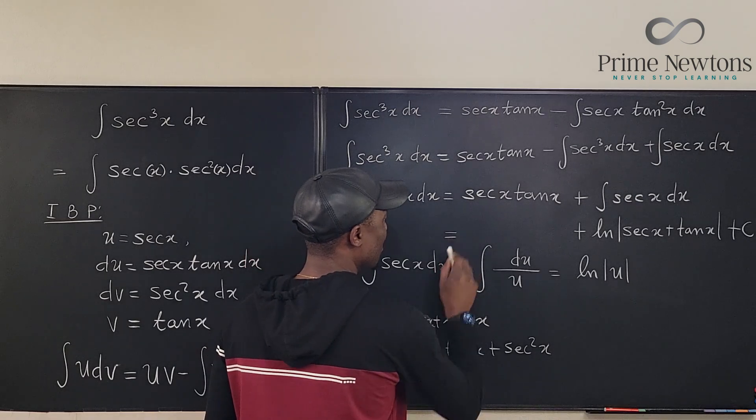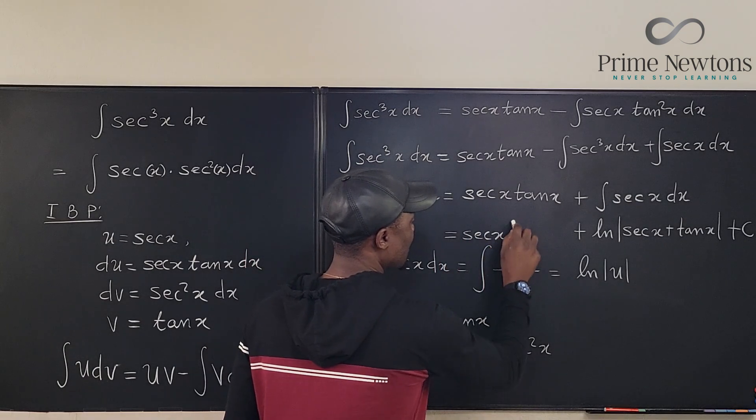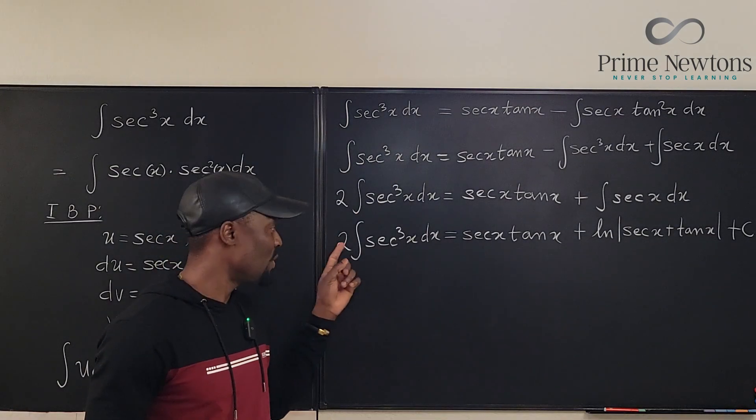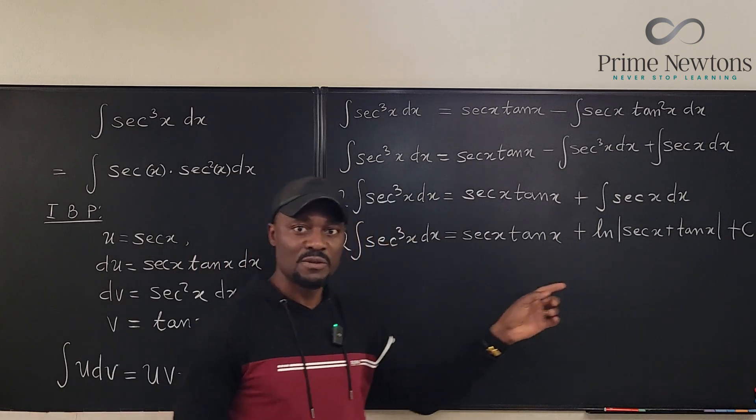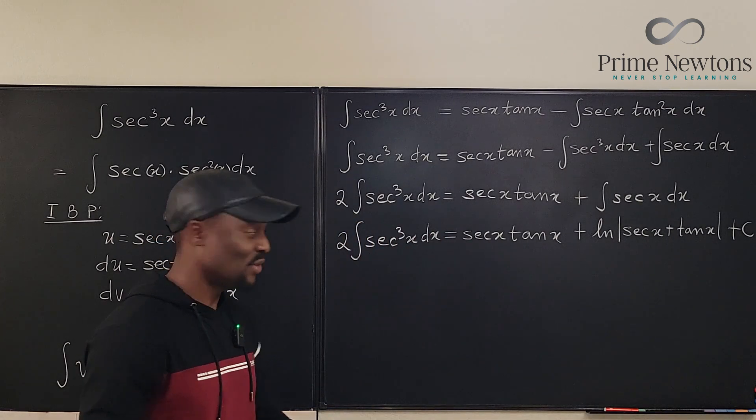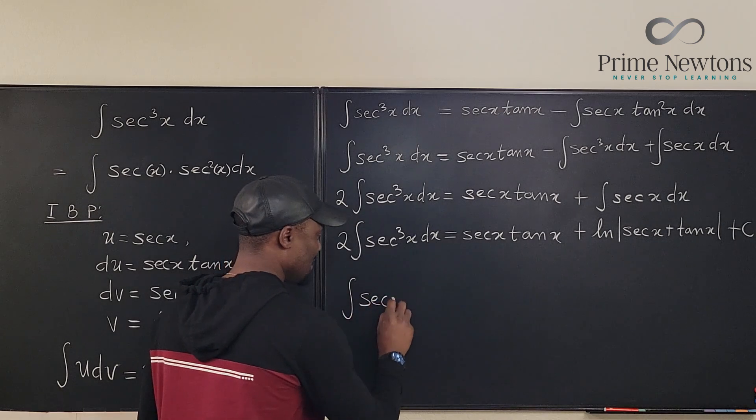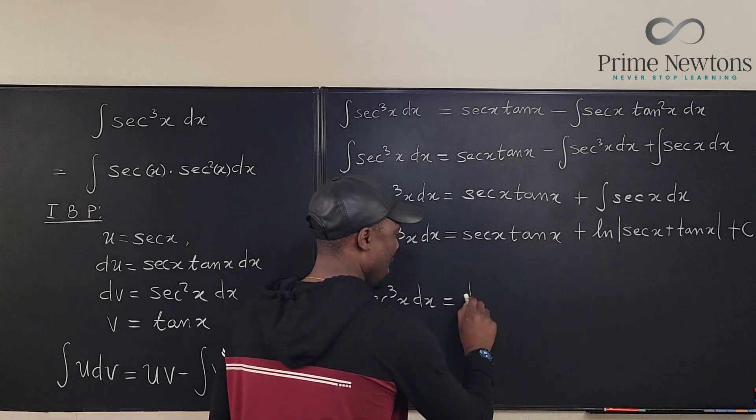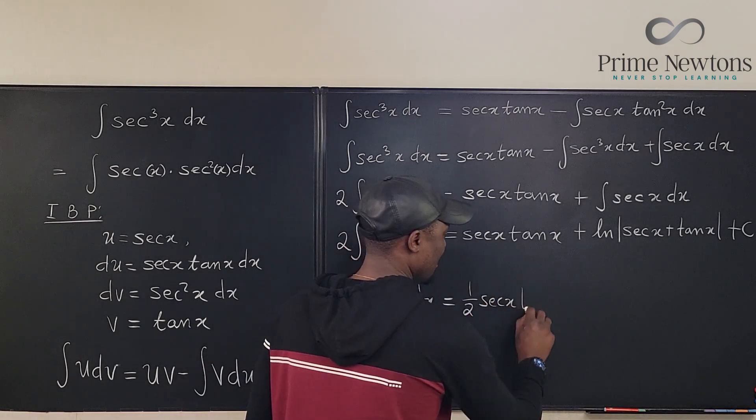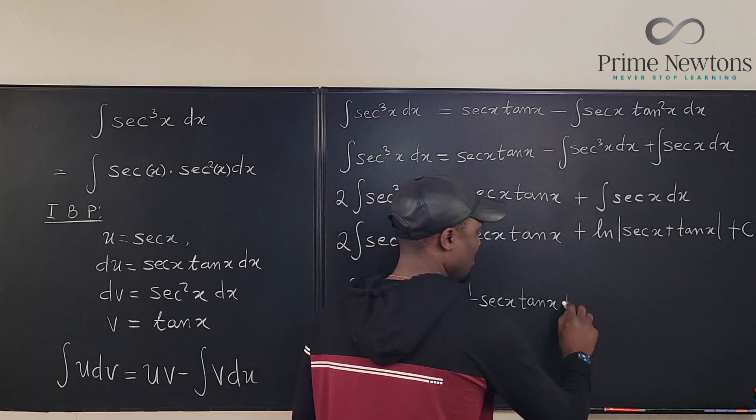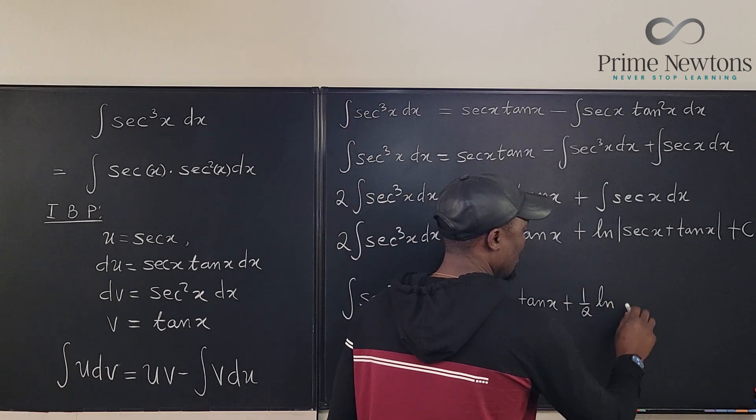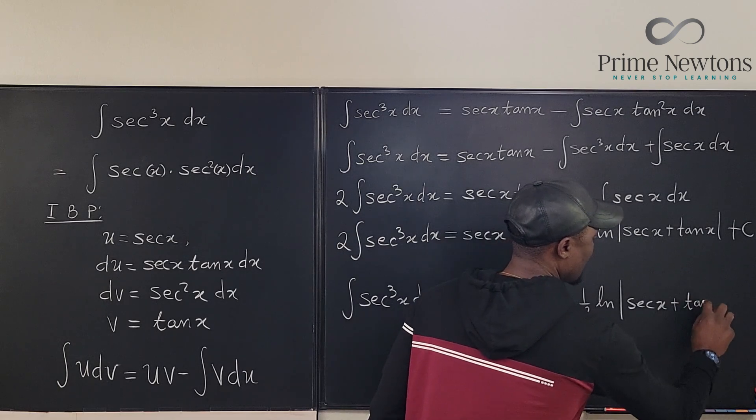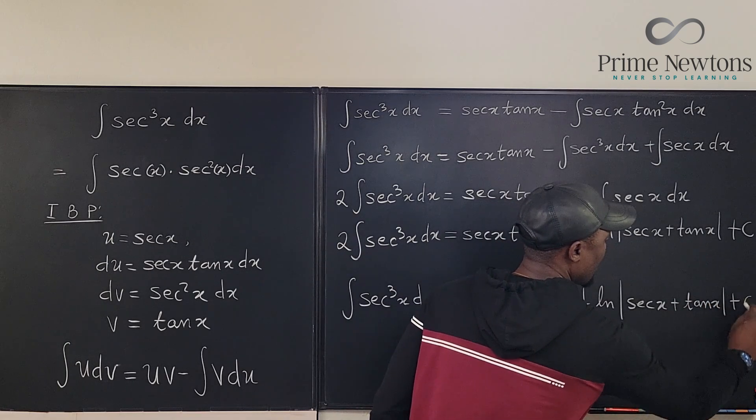So since what we're looking for is secant cubed, we don't need this two. We have to divide everything by two and that's where the one half shows up. So we know that the integral of secant cubed x dx is equal to one half of secant x tan x plus one half of the natural log of secant x plus tan x plus c.